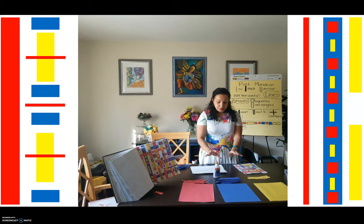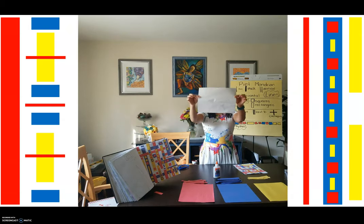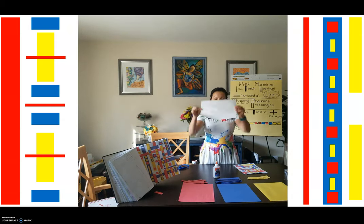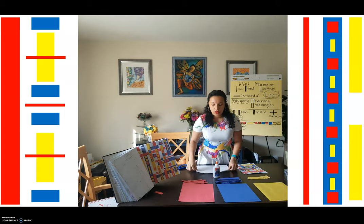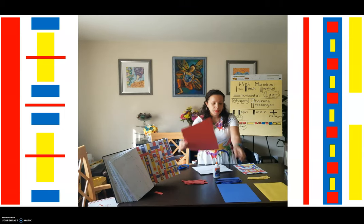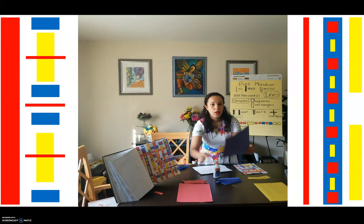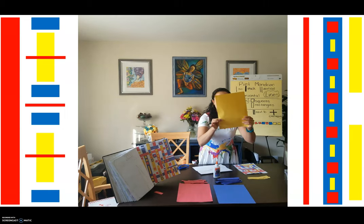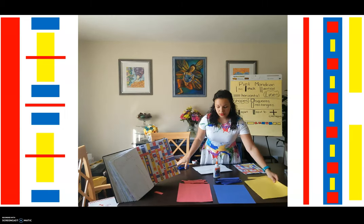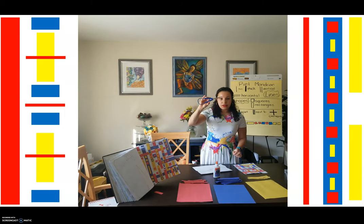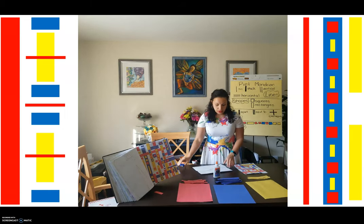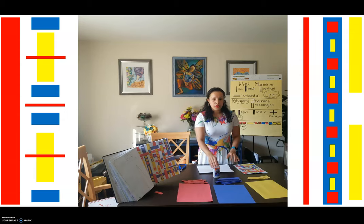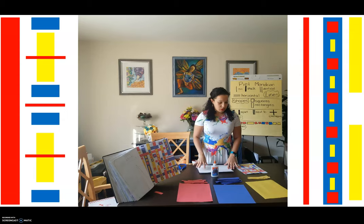A couple of things that we need to get started: a sheet of white paper, red paper, blue, and yellow paper, and some scissors. And I think we're all set to get started.